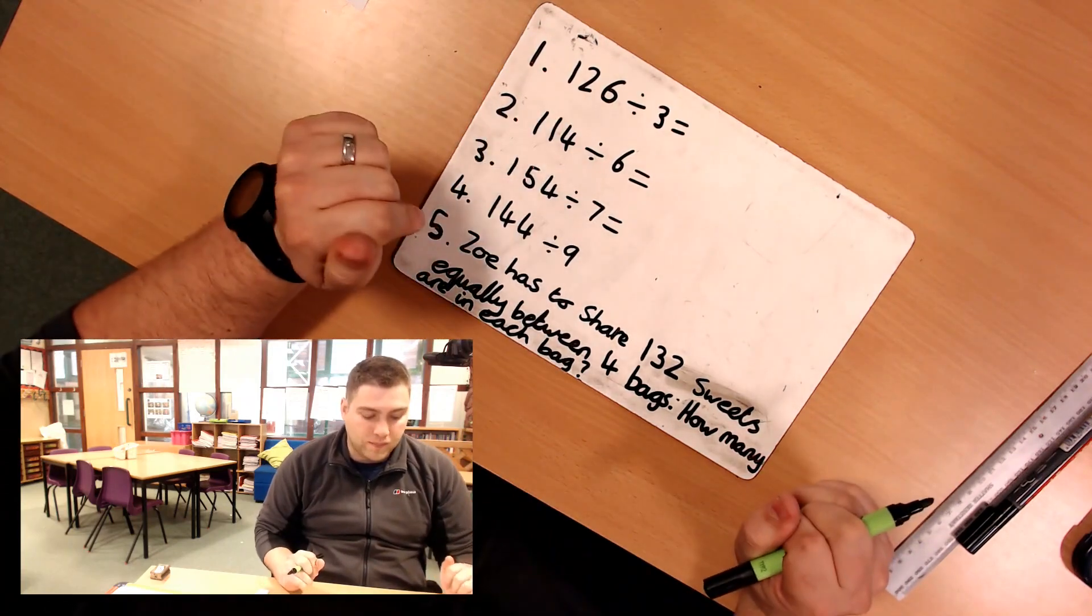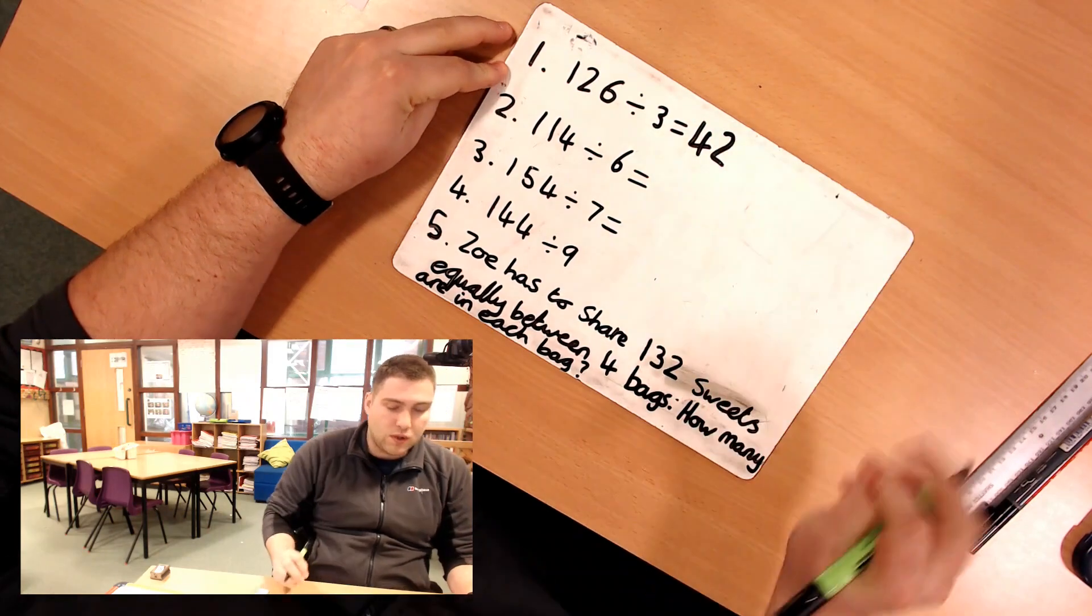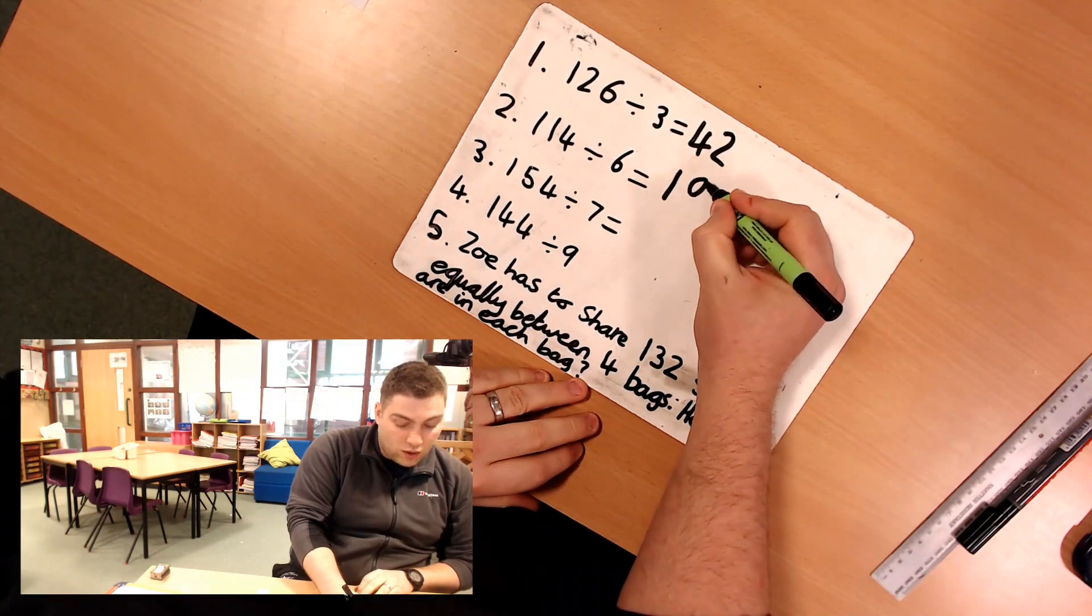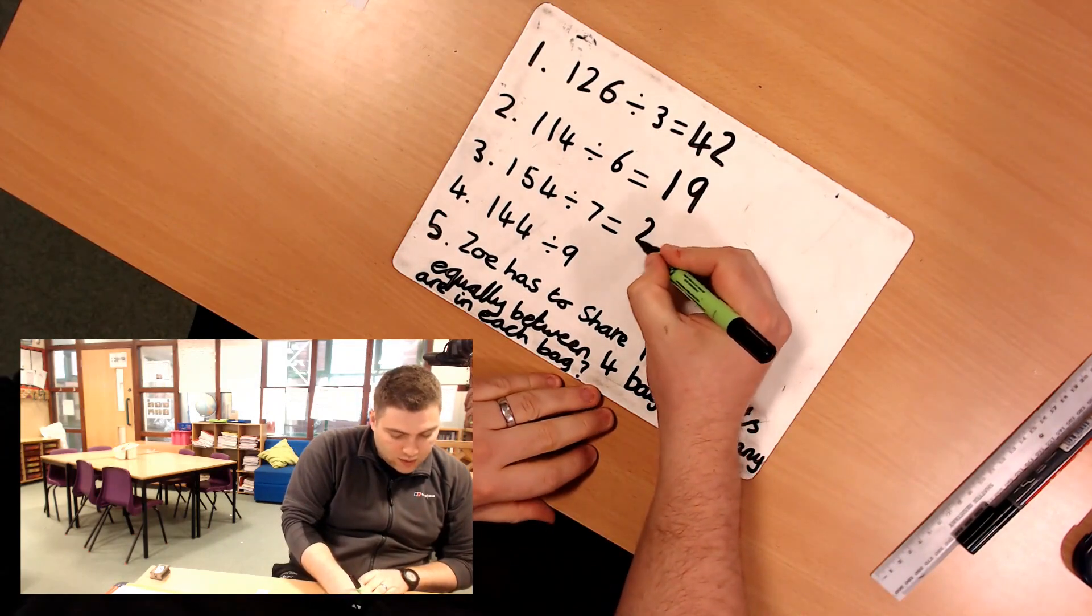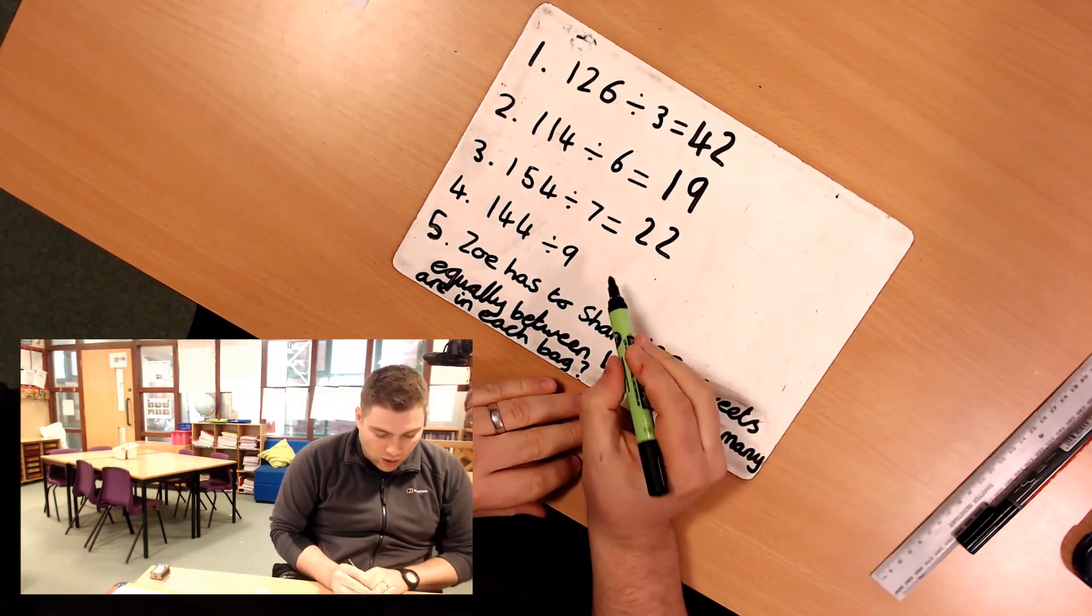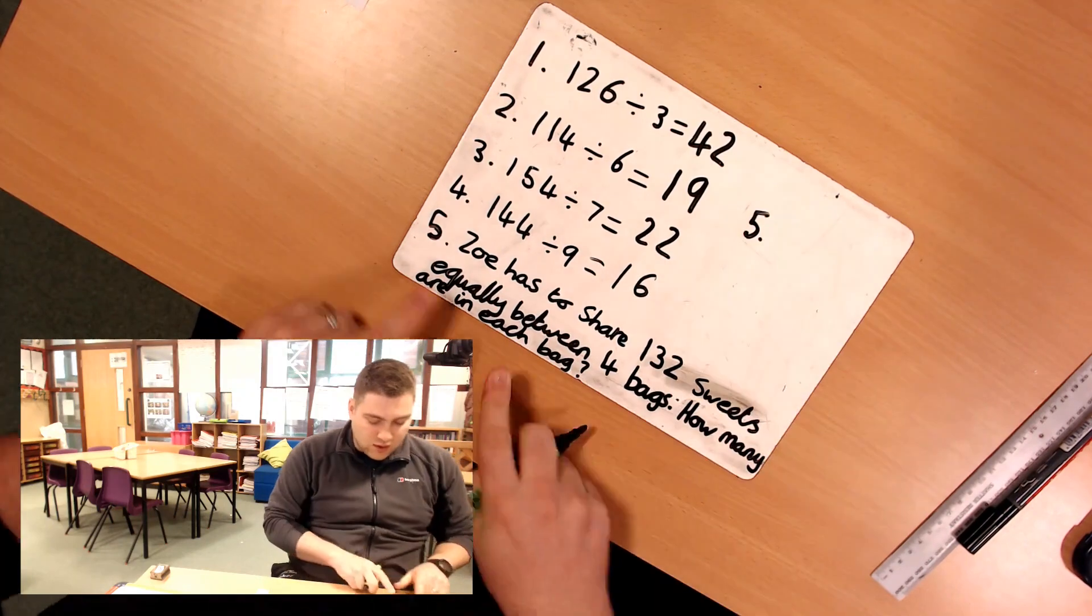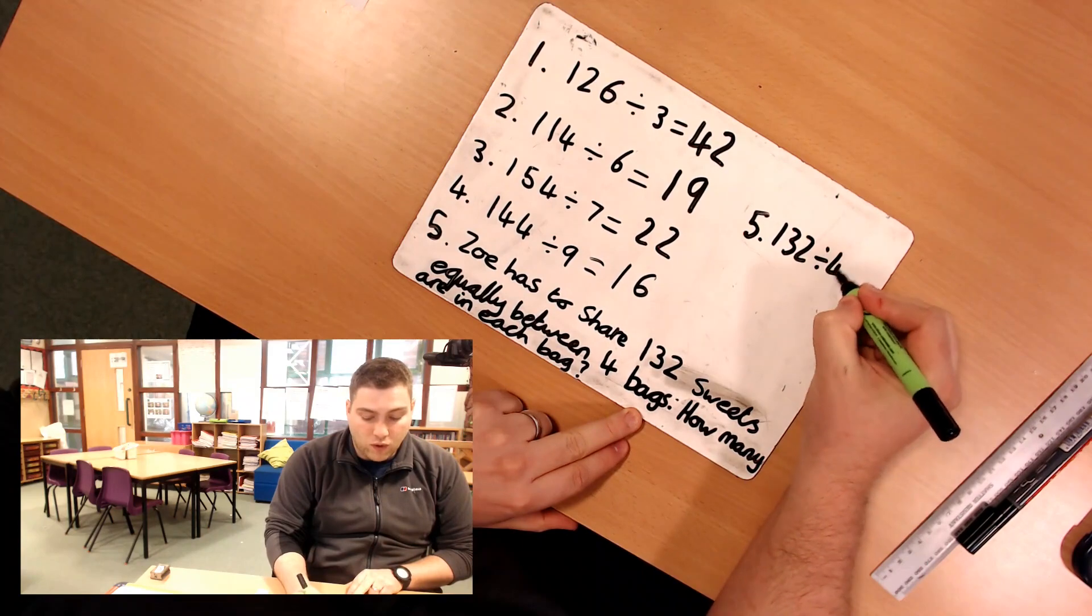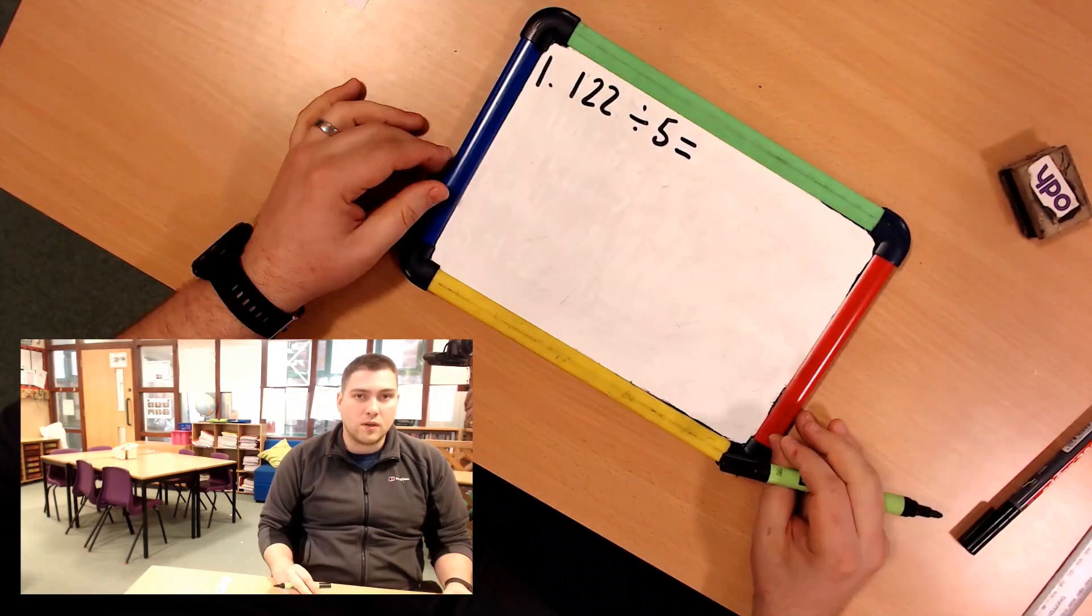Okay, number 1, 126 divided by 3, you should have 42. Number 2, 114 divided by 6, you should have 19. Number 3, 154 divided by 7 should give you 22. Number 4, 144 divided by 9 should give you 16. Number 5, just because there's not a lot of space there, I'm going to write it next to it. So it's 132 divided by 4 and that should equal 33. So they get 33 sweets in a bag. Okay, I'm just going to show you this problem here.